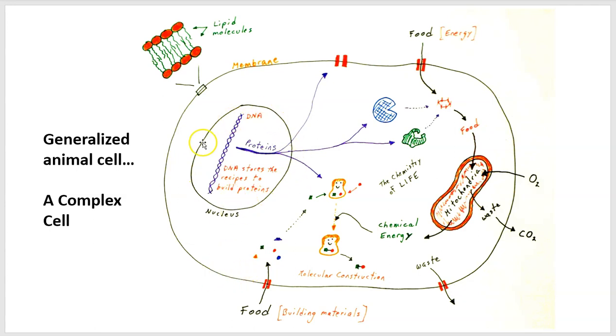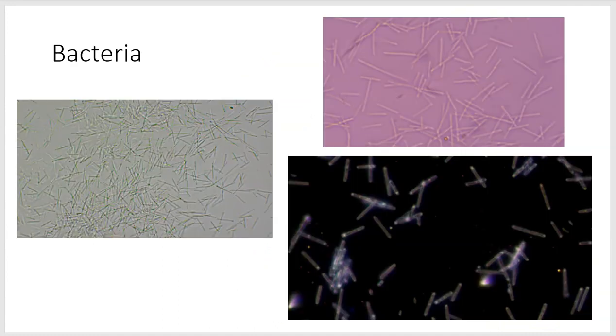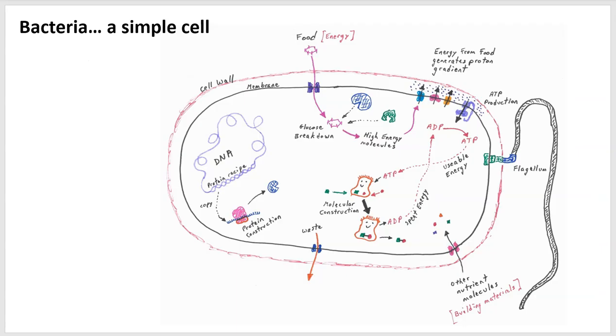Well, we've got the nucleus. That's a feature of a complex cell. Mitochondria. That's a feature of a complex cell. And the large size is a feature of a complex cell. That's in contrast to bacteria, which are smaller, but we can also draw a cartoon that represents this type of cell as well. And we're going to use this picture as our cartoon.